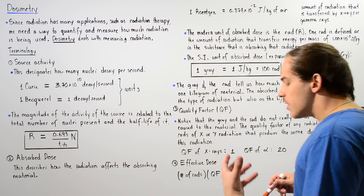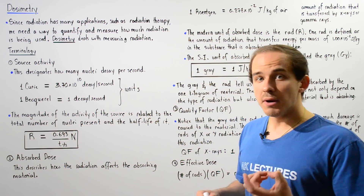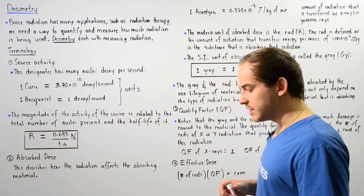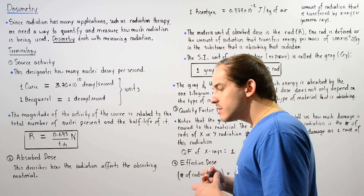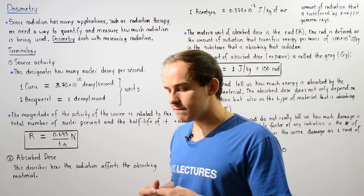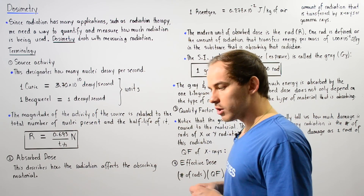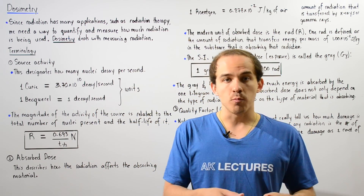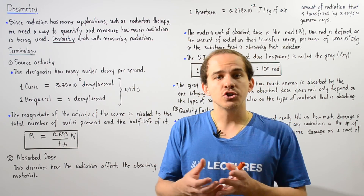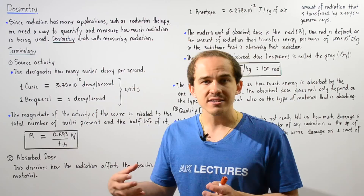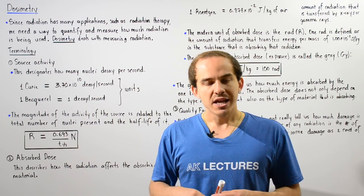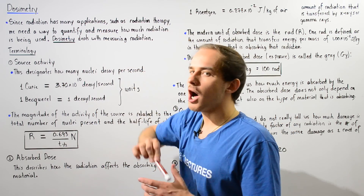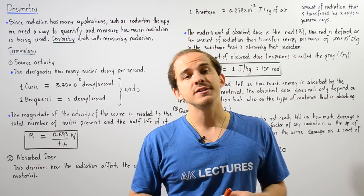We're going to discuss four important terms that we must know whenever conducting dosimetry. Let's begin by defining the source activity. The source is basically some type of radioactive isotope or nuclei that readily undergoes radioactive decay, releasing radiation in the process. The source activity, or simply the activity, is the number of nuclei that decay every single second.